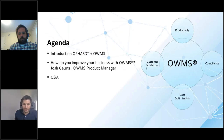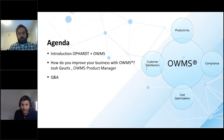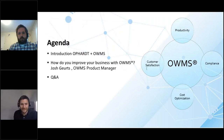If at any point you have a question, please use your GoToMeeting control panel and enter your question into the questions section. If you don't see an option for that, press the orange or red arrow and expand the control panel. If you're still having issues, just send us an email and we'll answer it during the webinar or reach out to you afterwards.